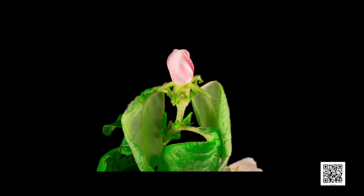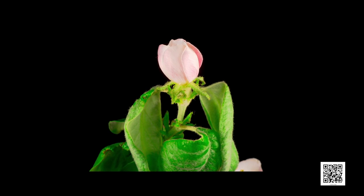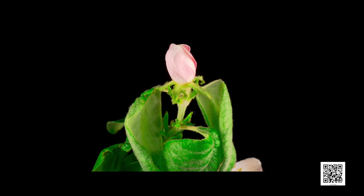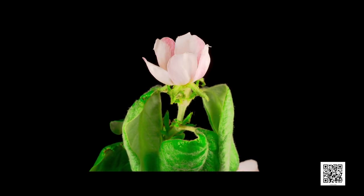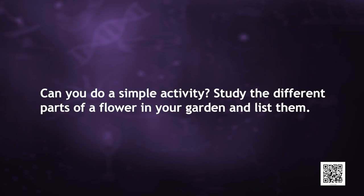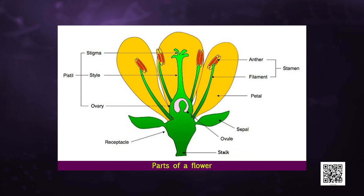Now let us discuss the process of sexual reproduction, and first we will describe sexual reproduction in flowering plants. Flowering plants, also known as angiosperms, have both male and female reproductive organs. The reproductive parts of angiosperms are located in the flower. Can you do a simple activity? Study the different parts of a flower in your garden and list them. The parts of a flower are sepals, petals, stamens, and carpels.